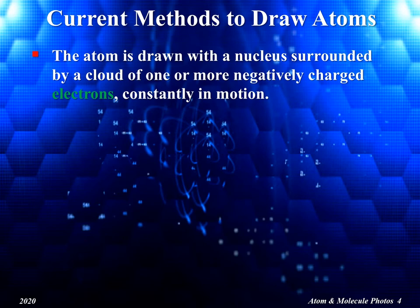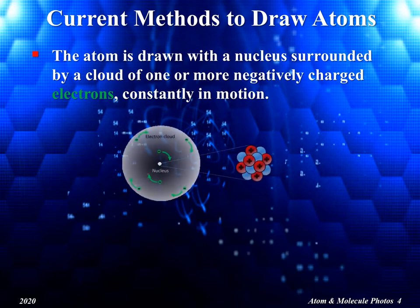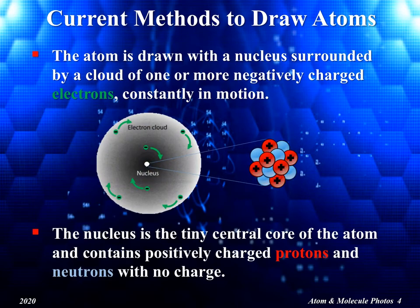A typical drawing of an atom would be like that shown in the diagram. In this view, the nucleus is shown as the tiny central core of the atom, and contains positively charged protons and neutrons which have no charge.